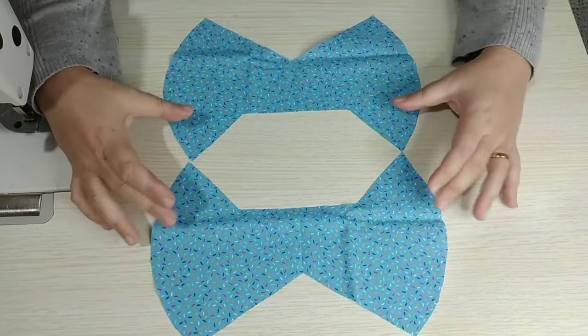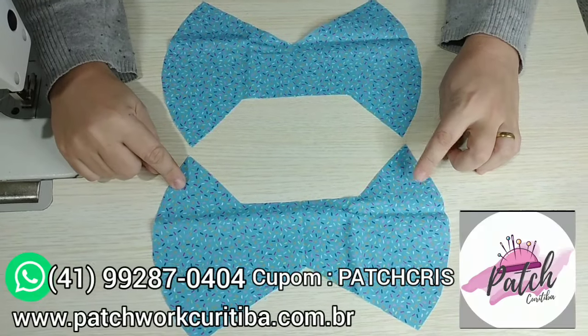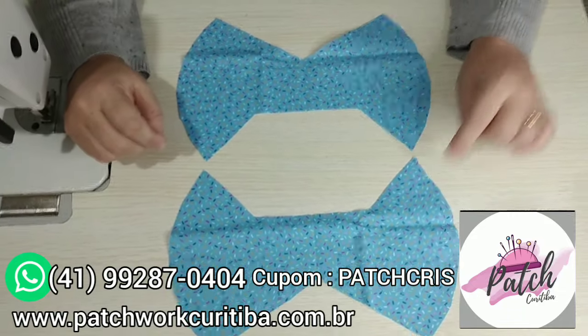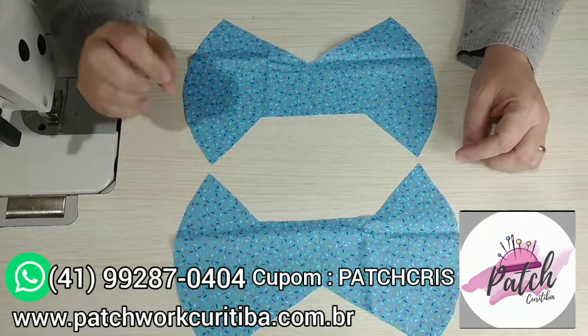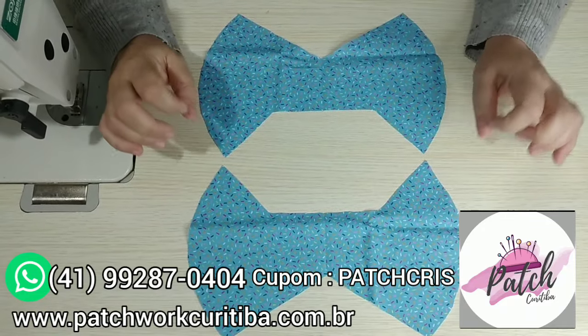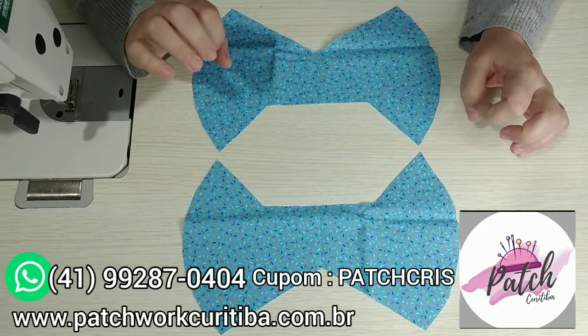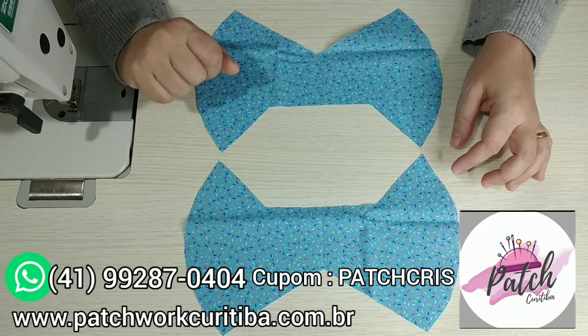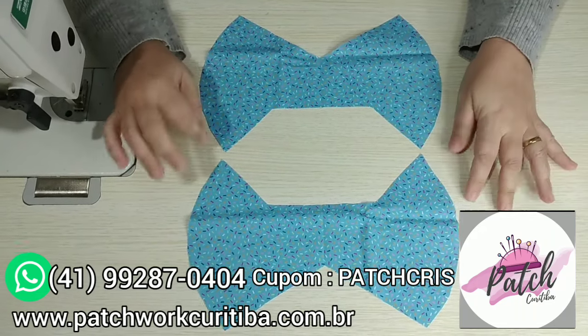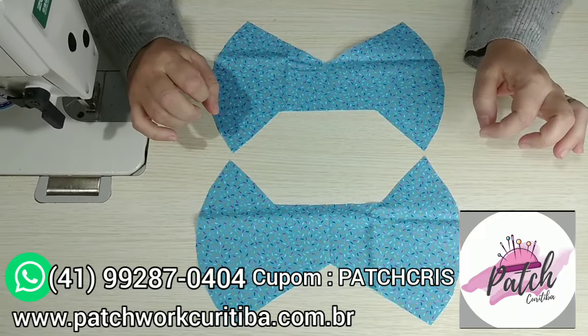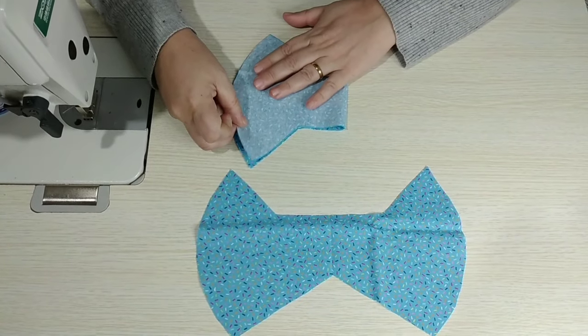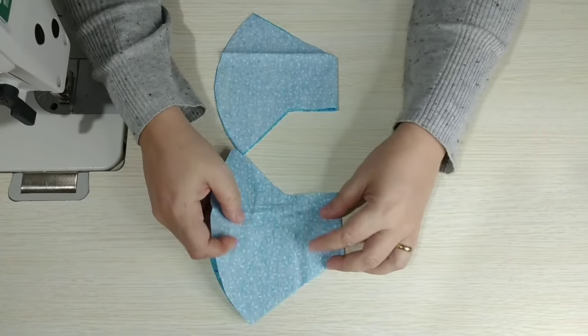Pronto, pessoal. Já cortei. E ficou assim. Lembrando, pessoal, que esse tecido fofíssimo de granulado colorido é lá da nossa parceira aqui do canal, a Patchwork Curitiba. Vai tá passando aqui na tela os contatos dela. WhatsApp, site, tudo que eu tenho deles pra vocês. E comprando com o nosso cupom de desconto que é PETCRIS, tudo maiúsculo, tudo junto, você tem 5% de desconto nas compras acima de 100 reais lá no site.